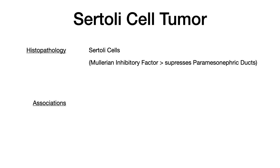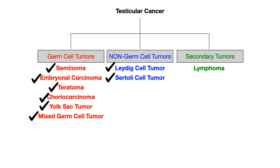The other non-germ cell tumor is the Sertoli cell tumor. There's really nothing high-yield to know here — the histology shows Sertoli cells, which recall from embryology are the cells that secrete Müllerian inhibitory factor, suppressing the paramesonephric ducts. If you see a Sertoli cell, it's a Sertoli cell tumor. That's all of the non-germ cell tumors.